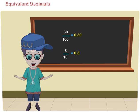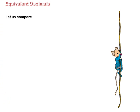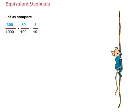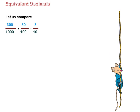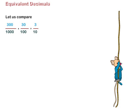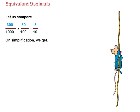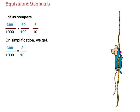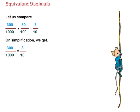Equivalent decimals. Let us compare fractions 300 upon 1000, 30 upon 100, and 3 upon 10. On simplification, we get 300 upon 1000 equal to 3 upon 10.